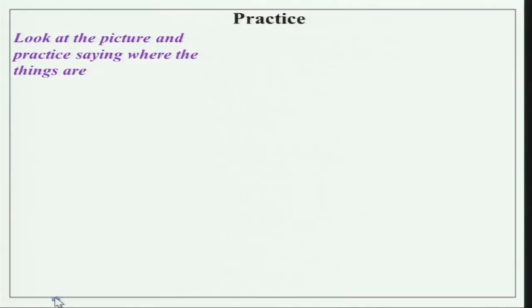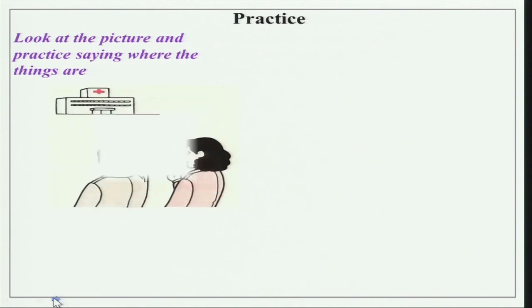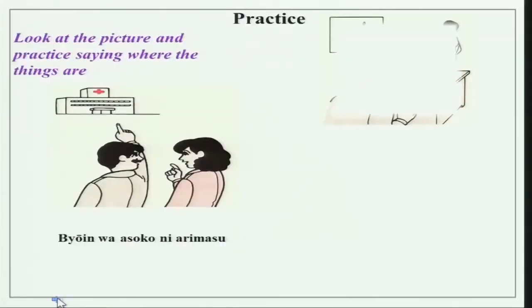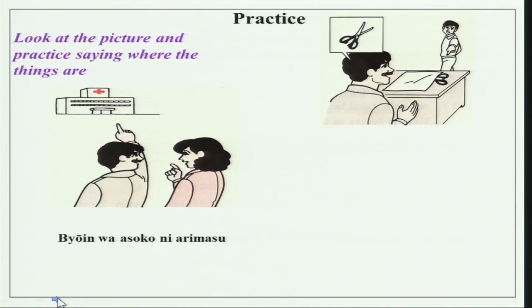We have a small practice exercise. Look at the picture and practice saying where the things are with your partner. The first picture shows two people, and this gentleman is pointing at something. Byouin wa asoko ni arimasu. Last time we had done byouin wa asoko desu. Now the exact location of the byouin is over there — ni arimasu gives the precise location.